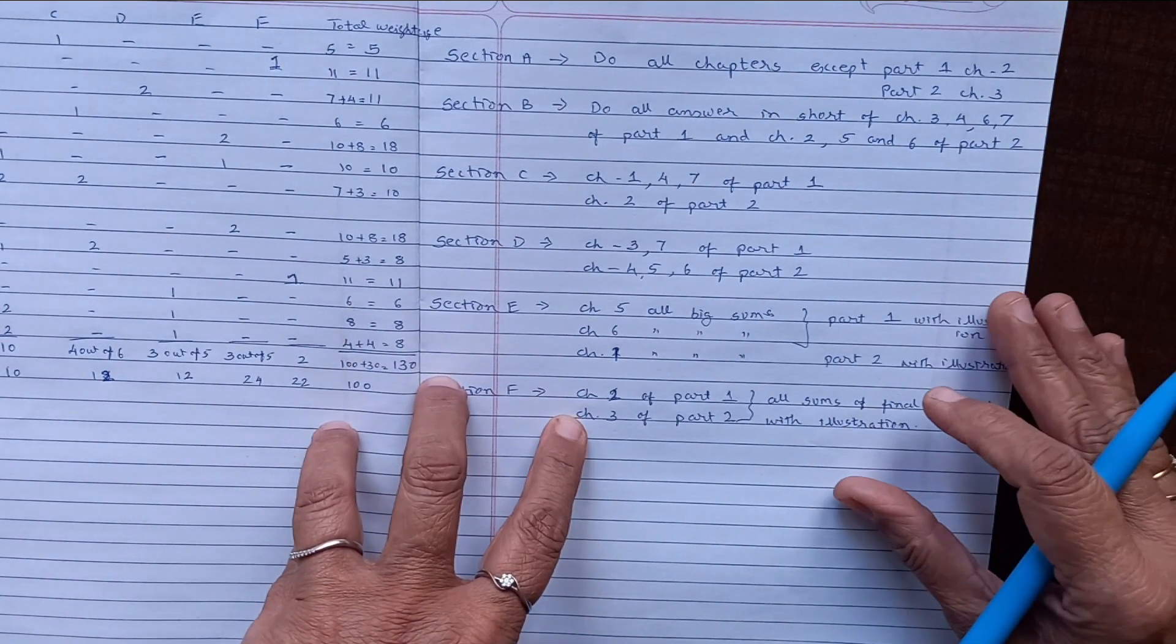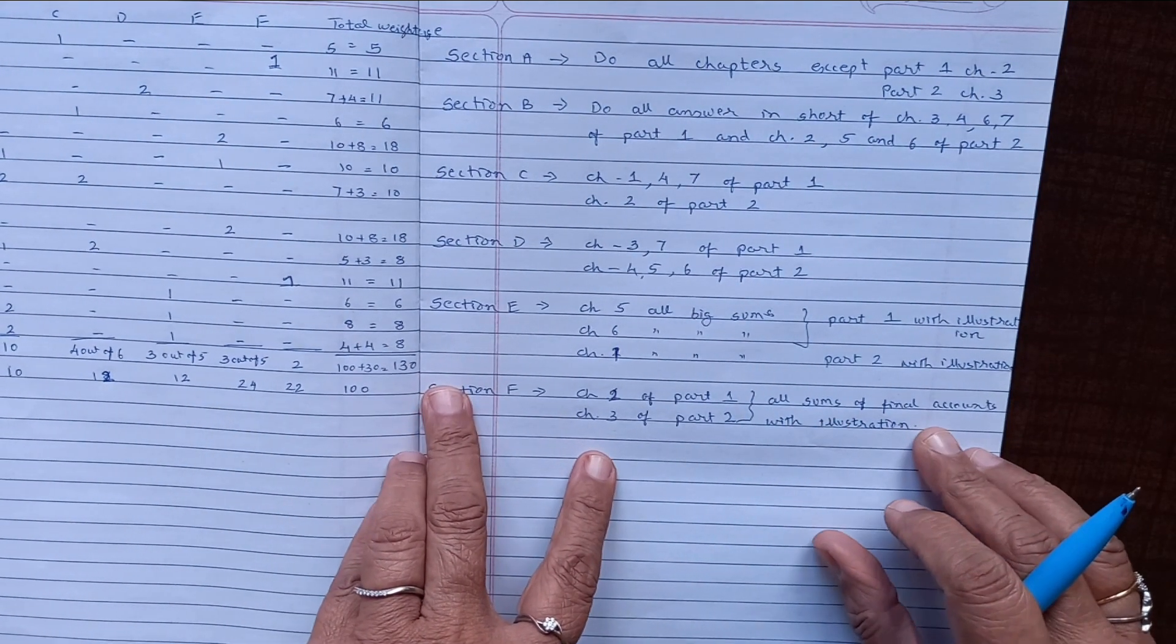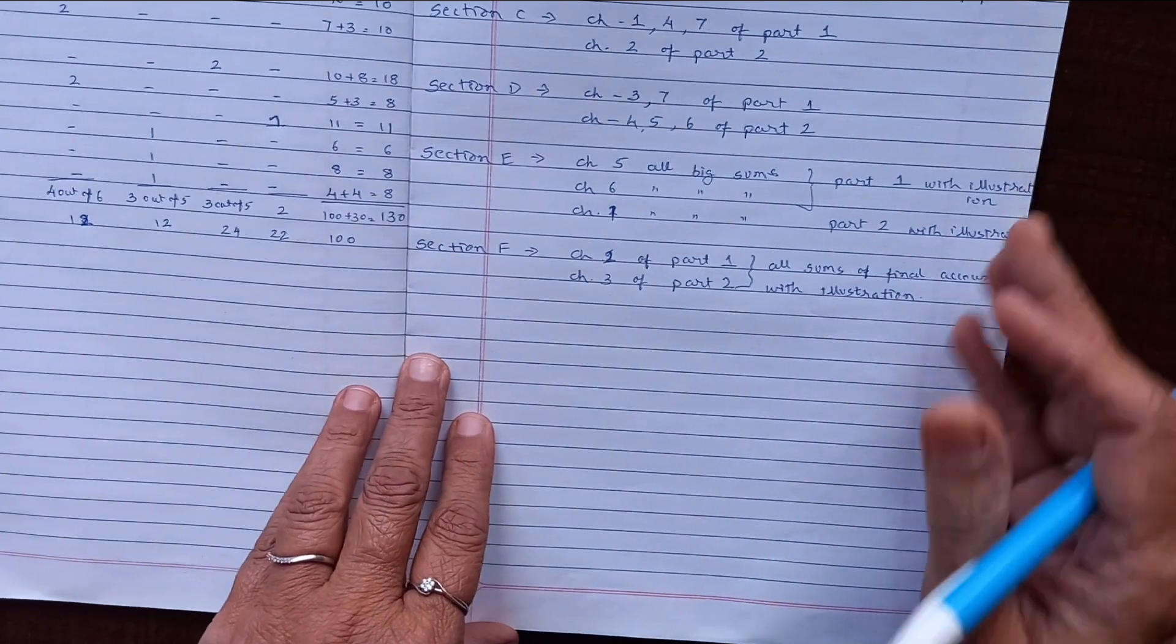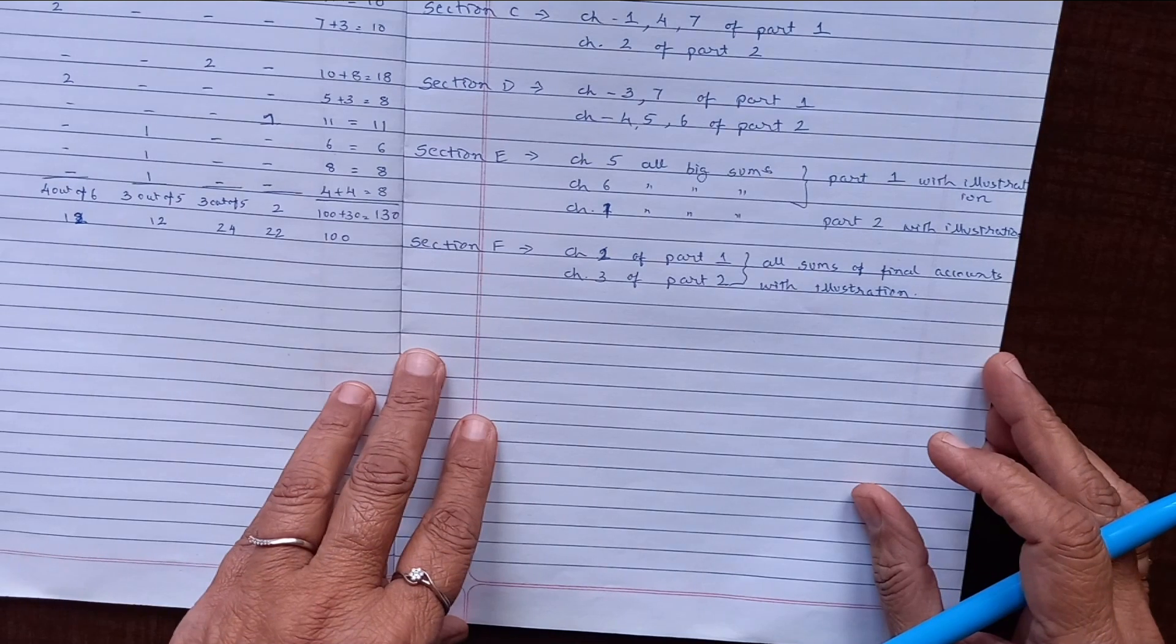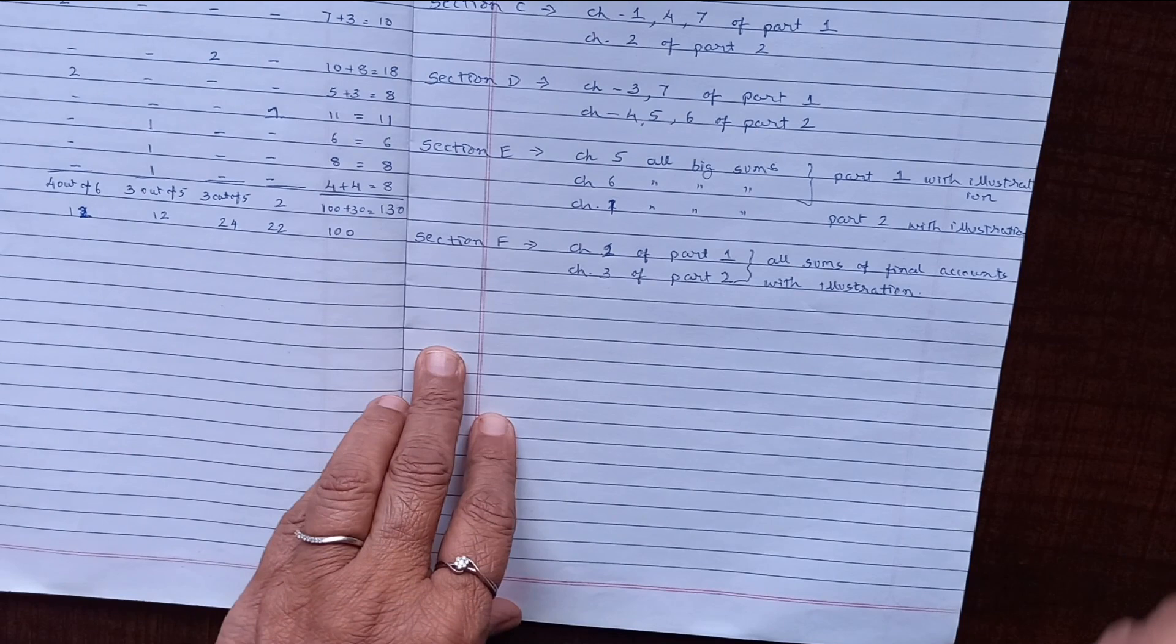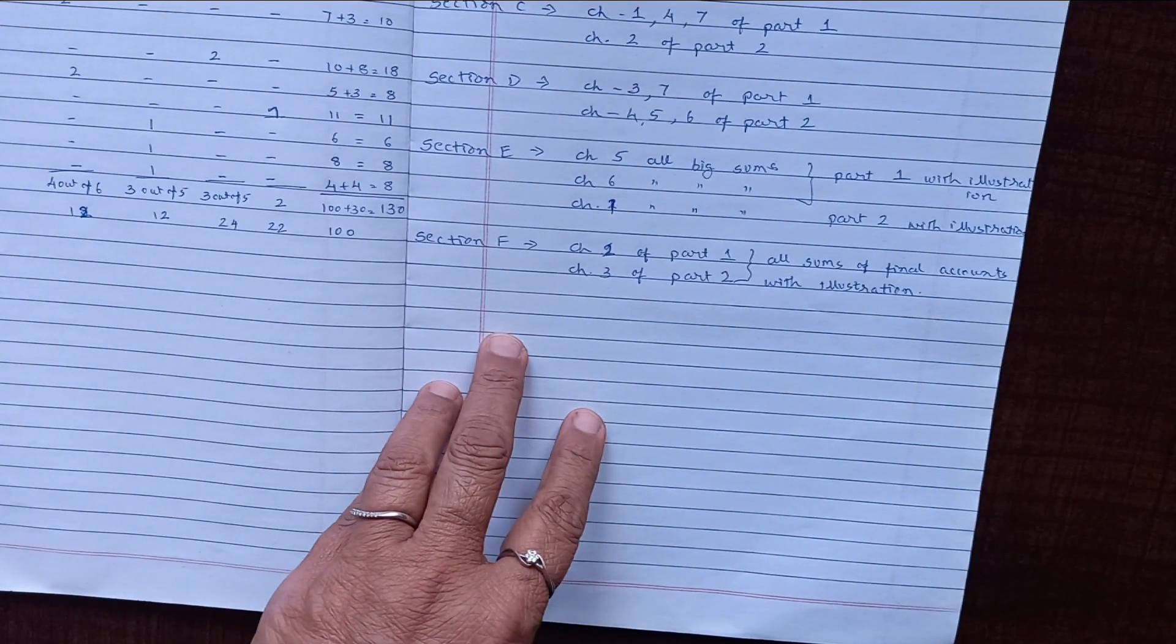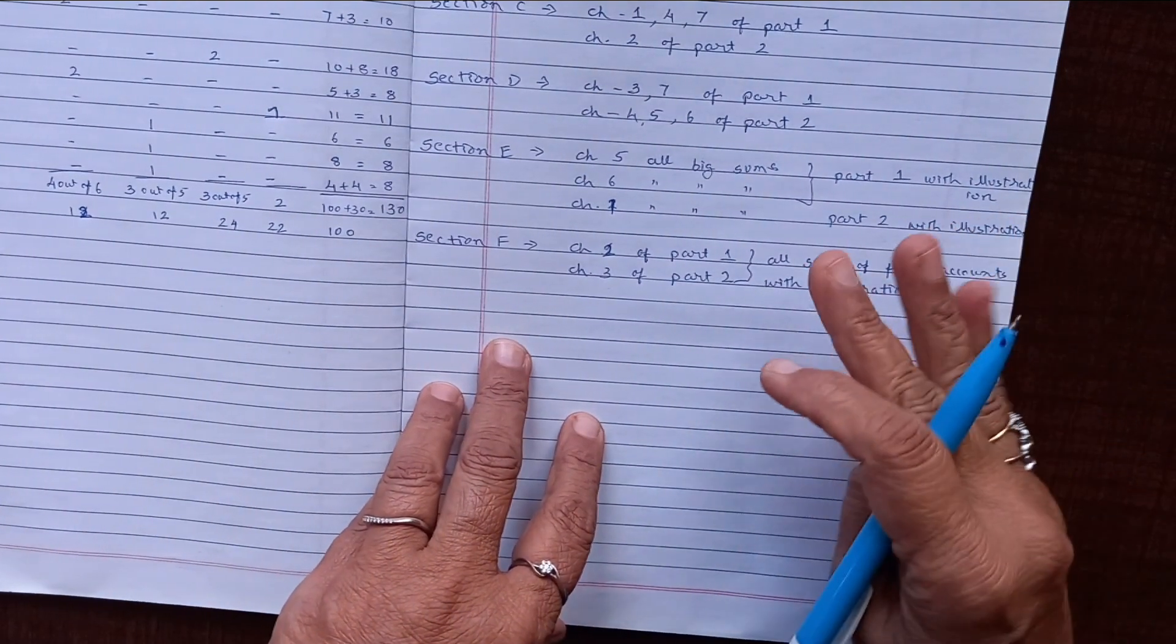Accordingly, the preparation to be done. So all sums of the final account along with illustrations—see, better in the textbook they have given quite lengthy questions. That much big may not be possible, but any selective adjustments are going to be there. So adjustments understanding is more important than you do the whole example. For learning adjustments, there is a very compact video including all the adjustments on my channel. Please go through it; that will help you out.